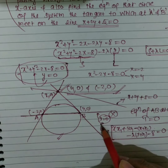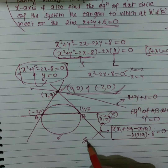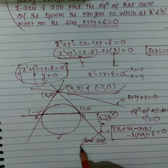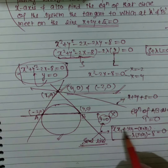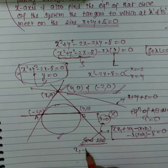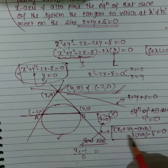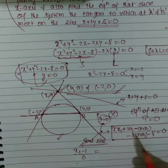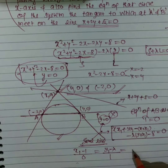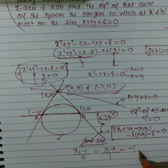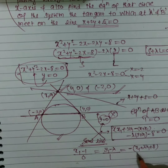This equation and the equation y = 0 represent the same line. Since both equations represent the same line, we can compare coefficients. The coefficient of x gives x₁ − 1, and here it is 0. The coefficient of y gives y₁ − λ, and here it is 1. The constant term gives −x₁ − λy₁ − 8, and here it is 0.